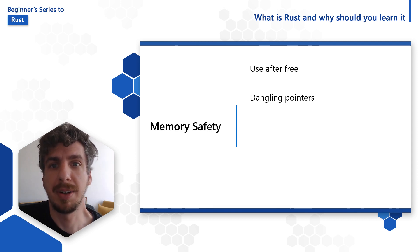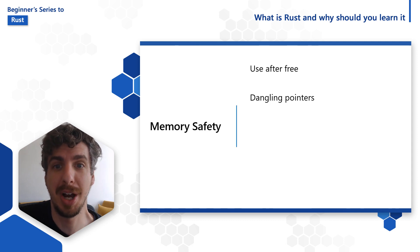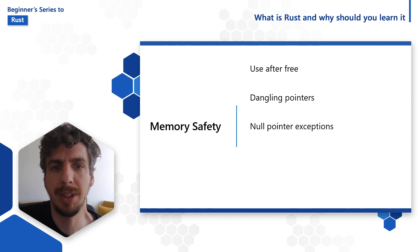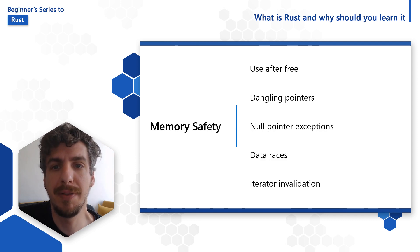As a side effect of Rust's memory safety guarantees, whole other classes of bugs that you would find in C and C++, and even in other languages like C# and Java, are completely eliminated. These include null pointer exceptions, data races, iterator invalidation, and more.